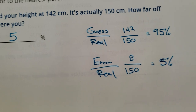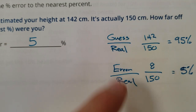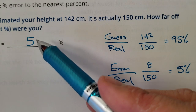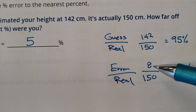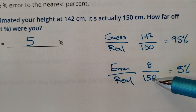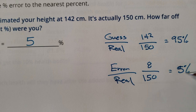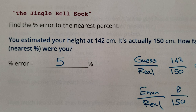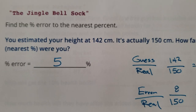So there are two ways to do that. You can straight up take your guess divided by the real — you're 95% accurate, which means you were 5% off. Or actually figure out the mathematical number error and divide by the real actual length or measurement, whatever you're measuring, and that will give you the percent error. Two ways to do it; they both work. Figure out which one you like better and use it to the best of your ability. That is the Jingle Bell Sock.